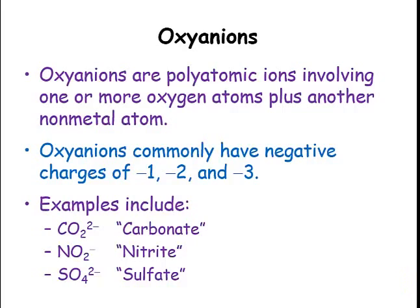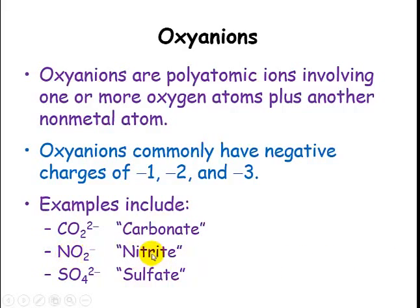Let's look at a few examples of oxyanions. This first one is called carbonate. Here's our nonmetal element other than oxygen — carbon — and then oxygen. We have the name of the element, or the root in some cases, and then '-ate', telling us that oxygen is present in that polyatomic ion. The second one, nitrite, is the same situation: 'nit' from nitrogen, and then oxygen, so nitrite. Notice we have '-ate' versus '-ite' — both tell us that oxygen is present in the compound.